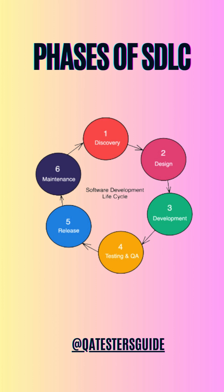SDLC has six main phases: planning, design, development, testing, deployment, and maintenance.